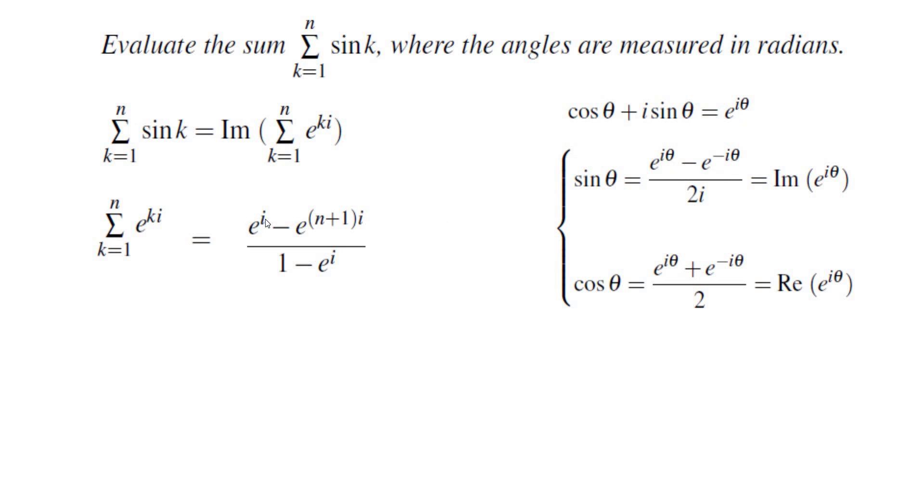When I look at the angles in the numerator, the angles are 1 and n plus 1. In order to turn them into negative of each other, I'm going to factor the average of the exponents.